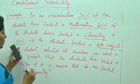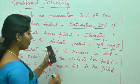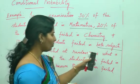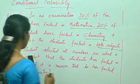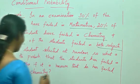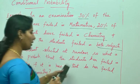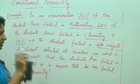A student is selected at random. What is the probability that the student has failed in maths if it is known that he has failed in chemistry?